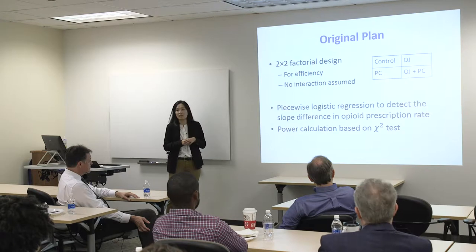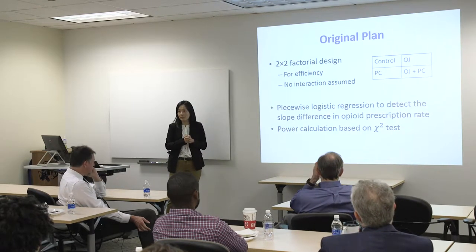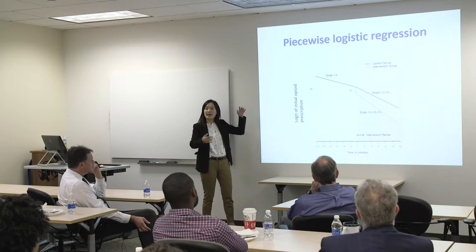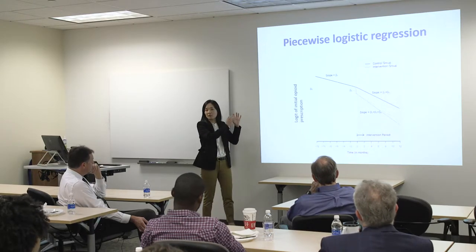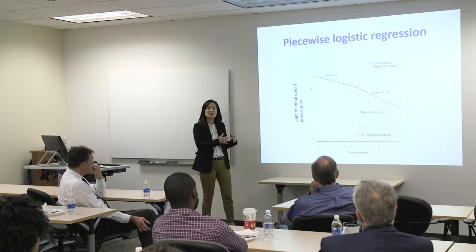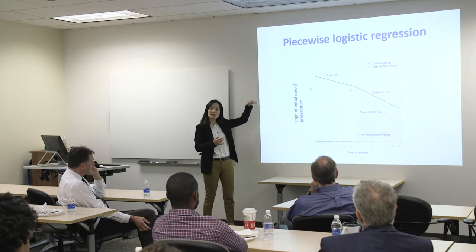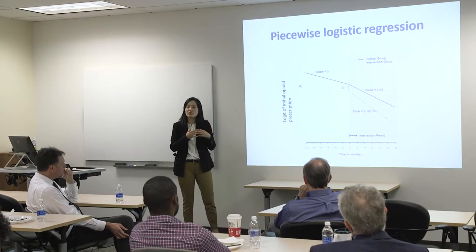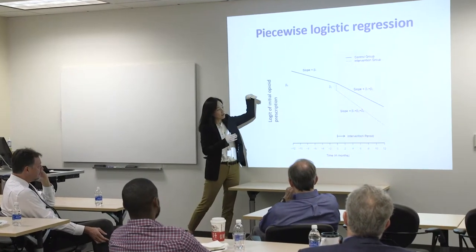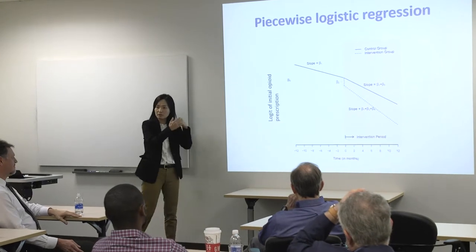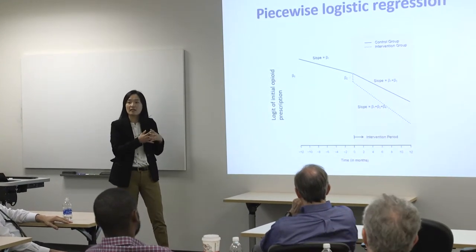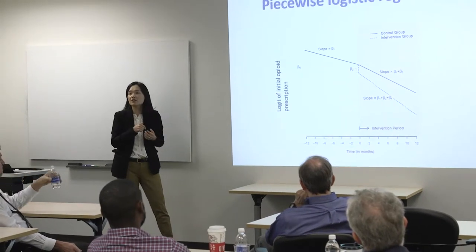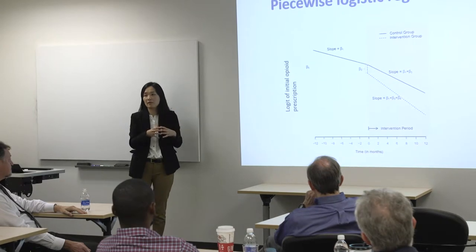We were going to use piecewise logistic regression to compare the primary outcome. That was because, as Kevin already said, because of all the things going on about the opioid epidemic and all the public pressure and other interventions going on, we thought the opioid prescription rate will go down anyways. What we wanted to detect was that our interventions would accelerate that — we wanted to compare the slope between the two groups. So rather than using a regular chi-square test or regular logistic regression, we wanted to use piecewise logistic regression that has time as a covariate.